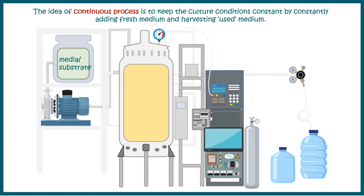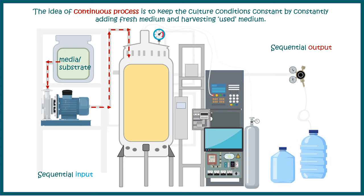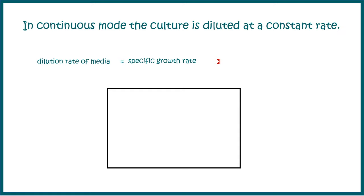Next, the continuous process. The idea is to keep culture conditions constant by always adding fresh medium and harvesting the used medium. You have a media or substrate reservoir providing sequential input over time, and a sequential outlet from which you take out products containing cells and media at different points in time. Sequential input and sequential output is the key feature. In a continuous process, the dilution rate of the media is exactly equal to the specific growth rate, which means the viable cell density remains constant throughout.